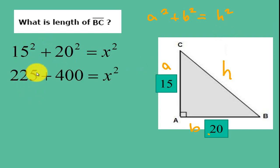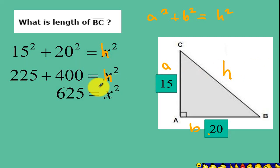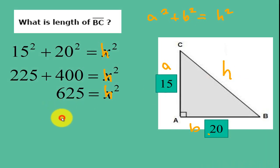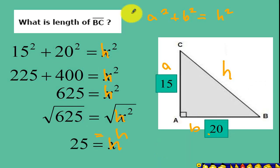Now 15 squared is 225. 20 squared is 400, equal to whatever your hypotenuse is. Remember that we are solving for our hypotenuse, so we let our variable be equal to X. Now if you want, you can replace this with H. Now 225 plus 400 is equal to 625, equal to H squared. Now we need the value of H. To get rid of your exponent 2, we have to take the square root. Square root of H squared will just be equal to H, and square root of 625 is equal to 25. Therefore, the value of our side BC is 25.